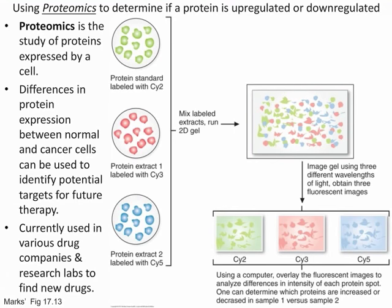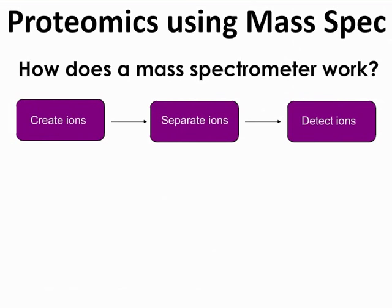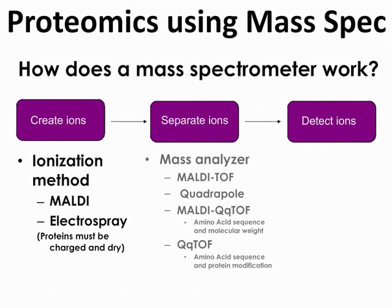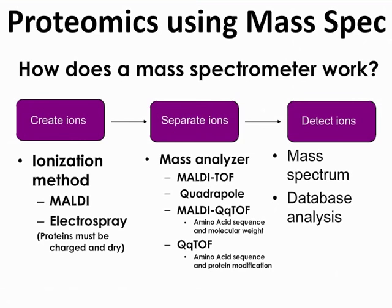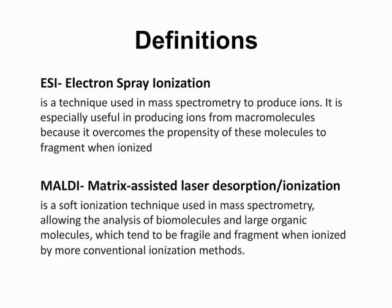Proteomics using mass spectrometry is definitely worth knowing as it has been tested. Mass spec works in three steps: first, you create ions using ionization methods like MALDI or electrospray (ESI); second, you separate the ions using a mass analyzer; third, you use a mass spectrum or database analysis to detect the ions. Know which methods fall under creating ions, separating, and detecting. Know the descriptions of ESI and MALDI so you can differentiate between the two.